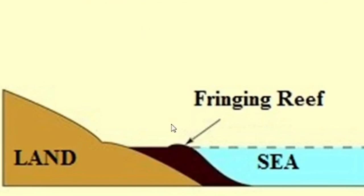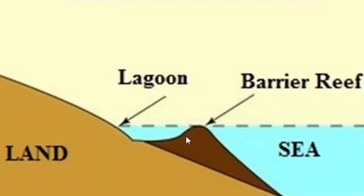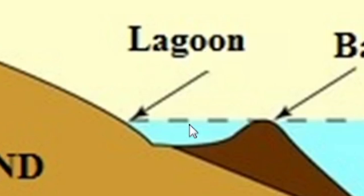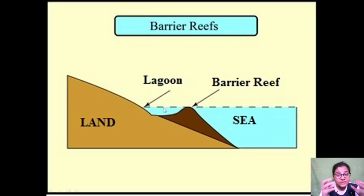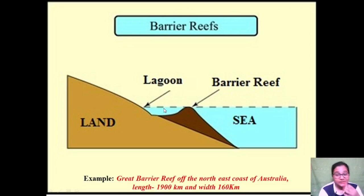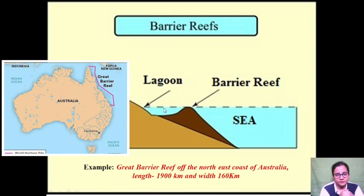The second type is the barrier reef. The reef forms at a larger distance away from the land. Some water comes in between the reef and the land — unlike in fringing reef where only a very narrow channel might form. In barrier reef, a greater amount of water forms a shallow lagoon — a partially enclosed water body — between the land and the reef. The classic example is the Great Barrier Reef on the northeast coast of Australia.